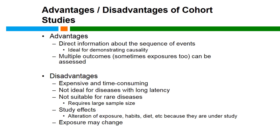Some disadvantages of cohort design include expense and time required. Cohort studies are not suitable for diseases with long latency, since you need to follow participants until they develop disease — which isn't feasible for conditions that develop over 20 or 30 years. They're also not suitable for rare diseases, as the required sample sizes would be too large. There's also potential for exposures to change over time due to natural changes — such as people moving addresses and thus changing air pollution exposures — or by altering habits or diets simply because participants know they're in a study and make lifestyle changes.